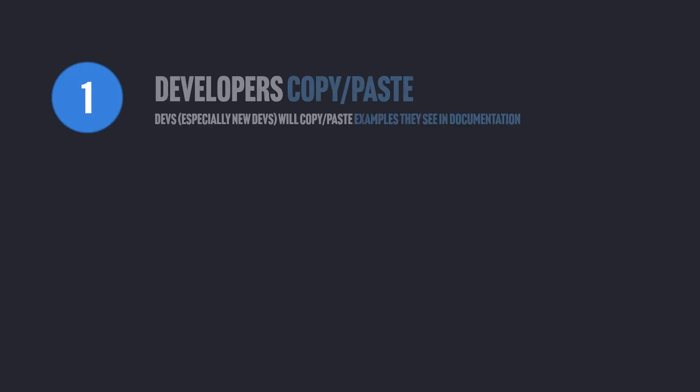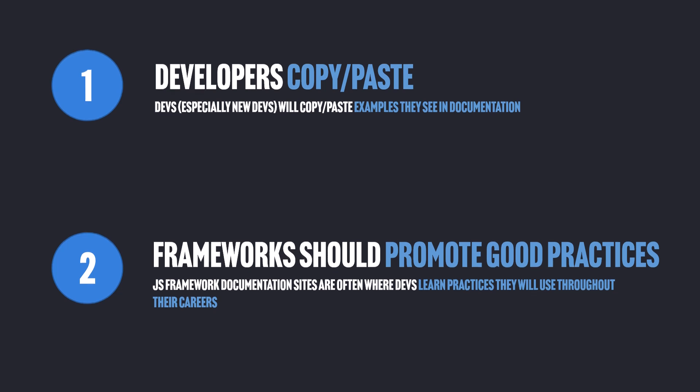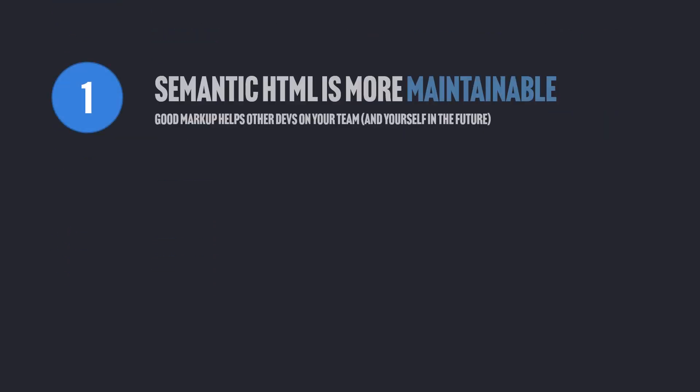What are some lessons we can learn from looking at the HTML in the examples in the various documentation sites of different JavaScript frameworks? This is important because developers copy and paste from what they see in the documentation. Maybe you do — certainly new devs do. Also, frameworks should promote good practices. Library and framework documentation sites are often where devs learn practices they will continue to use throughout their careers. It's also important for developer and user experience.